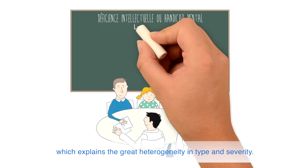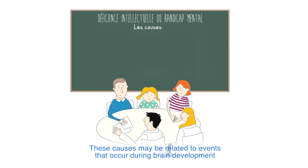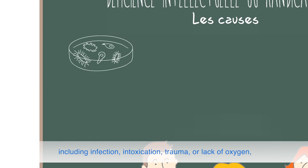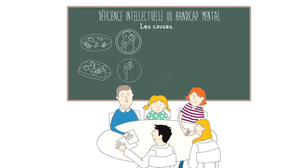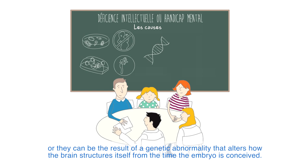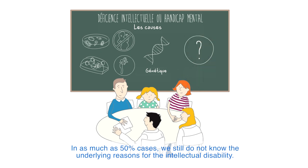Intellectual disability has many potential causes, which explains the great heterogeneity in type and severity. These causes may be related to events that occur during brain development, including infection, intoxication, trauma, or lack of oxygen. Or they can be the result of a genetic abnormality that alters how the brain structures itself from the time the embryo is conceived. In as much as 50% of cases, we still do not know the underlying reasons for the intellectual disability.